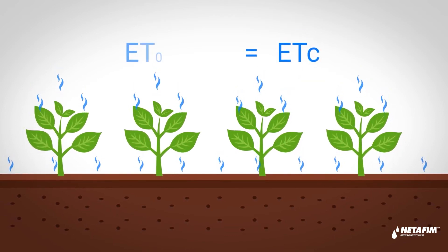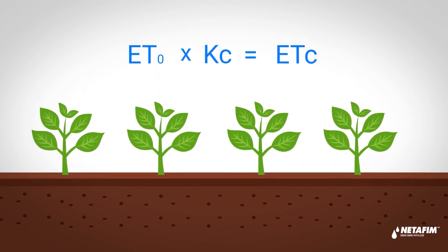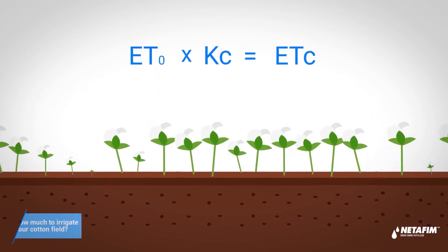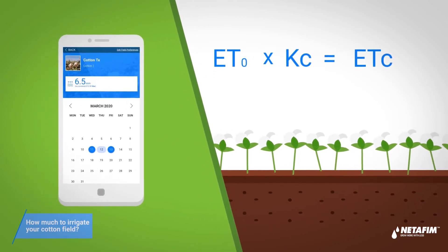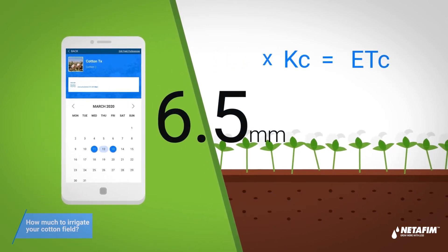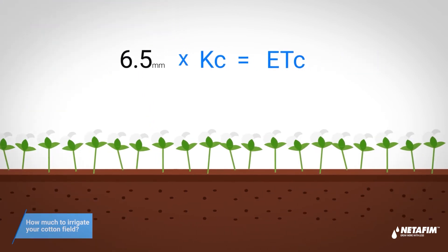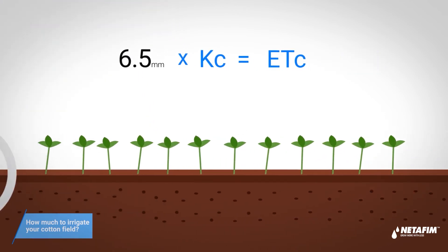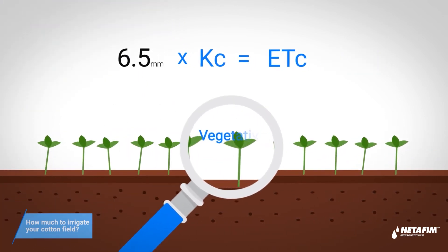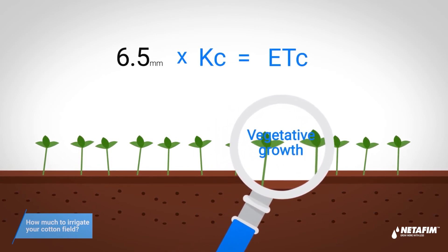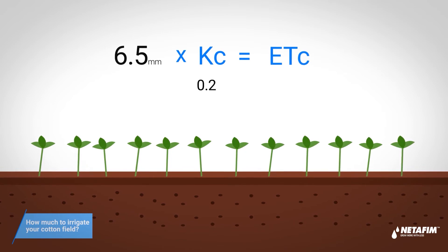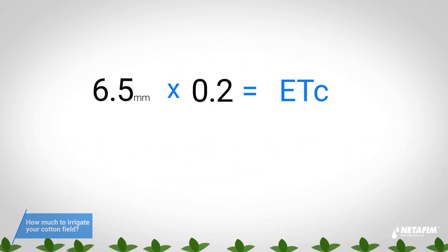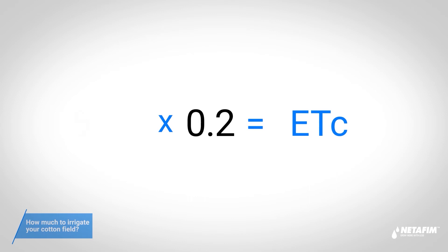Here's an example. Let's say you have a cotton field. According to the local weather station, yesterday's ETO was 6.5 millimeters. The cotton in the field is at growth stage vegetative growth, and according to the KC values, your KC is 0.2. Now we do the math.